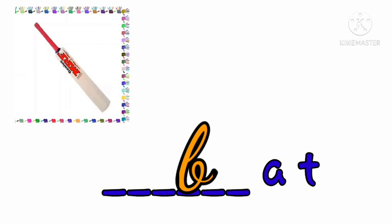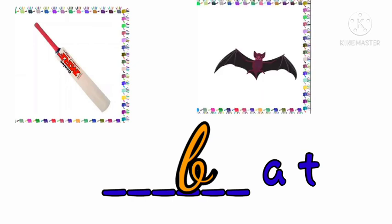Here you can see two types of bats. One is the bat we can play with, and the other is an animal — that is also called bat. Both pictures share the same name: bat. So the spelling is B-A-T. Bat.